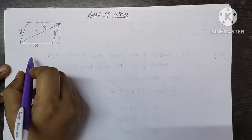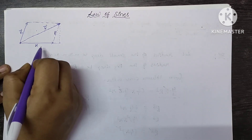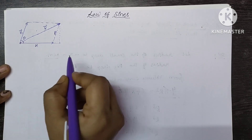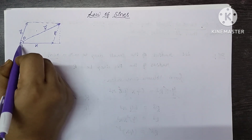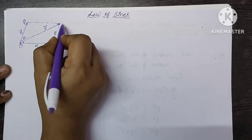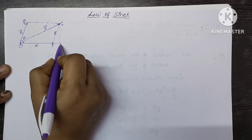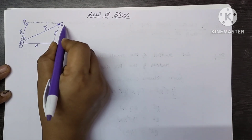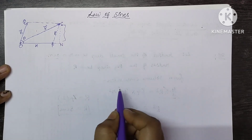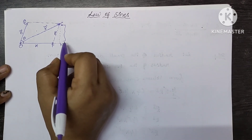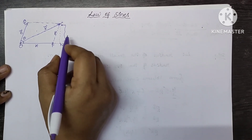For this we are considering a parallelogram which has two vectors kept at an angle of theta. The points are O, P, Q, S and N. I have already explained these values in a parallelogram law of vector addition. If you haven't seen that video, please watch it first, otherwise you cannot understand this video.